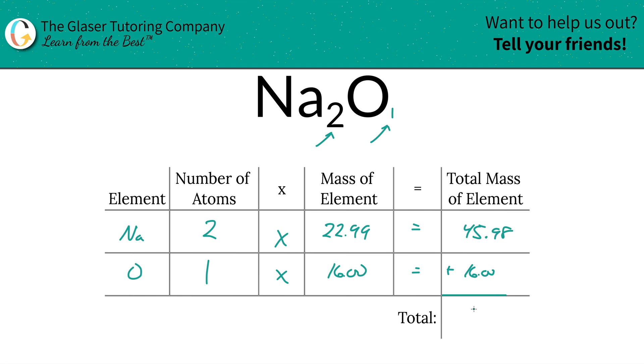So when you're going to add this column up, that's going to help you find the total mass of the entire compound. So 61.98, and the units are in AMU, atomic mass unit. That's because we're solving for molecular mass.